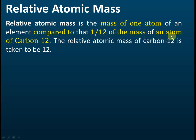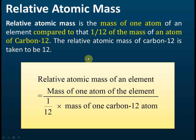By definition, relative atomic mass is the mass of one atom of an element compared to 1/12 of the mass of one carbon-12 atom, which is equal to 1 amu. The relative atomic mass of carbon-12 is taken to be 12. Mathematically, relative atomic mass = mass of one atom ÷ (1/12 of the mass of one carbon-12 atom), where the denominator equals 1 amu.